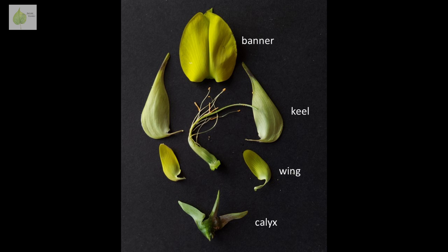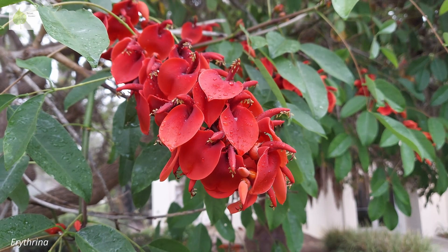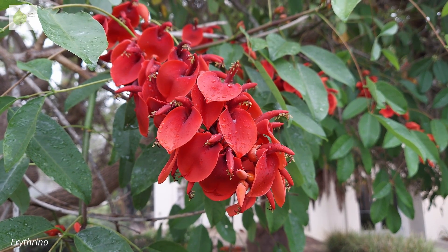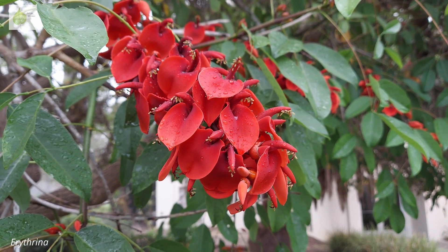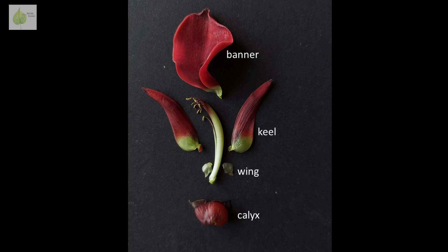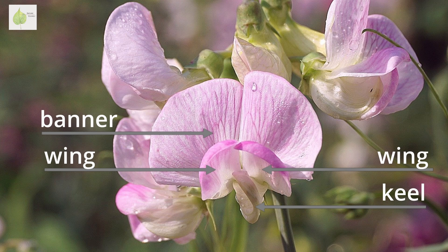When we dissect the flower, the parts are even more obvious. Another example is this Erythrina — the banner is very obvious, and the keel as well. However, the wings are very small and hidden inside, so the flower needs to be dissected for us to see all the parts. I recommend you try dissecting one or two Faboideae flowers to really understand the morphology and see all the parts for yourself.